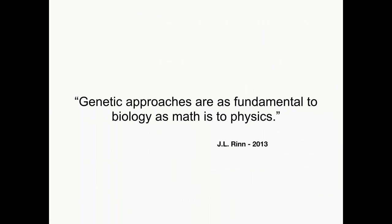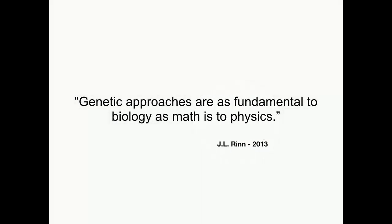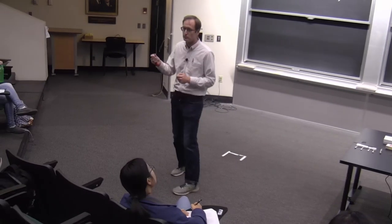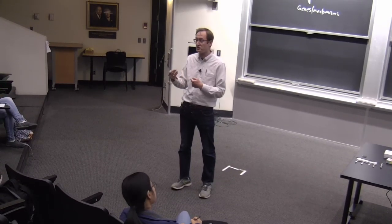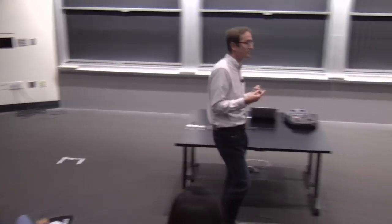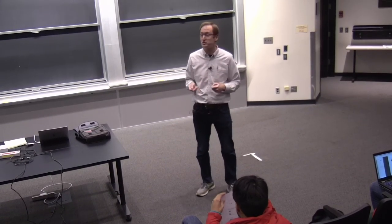I came across this quote when preparing for the lecture and I liked it. It's from John Wren, who is a contemporary of ours. John Wren said: 'Genetic approaches are as fundamental to biology as math is to physics.' I think this is an apt quote because both genetics and math themselves are scientific disciplines, but they can be leveraged to learn things about biology and physics, respectively. So genetics really plays a fundamental role in biology in the discovery of new biological mechanisms.